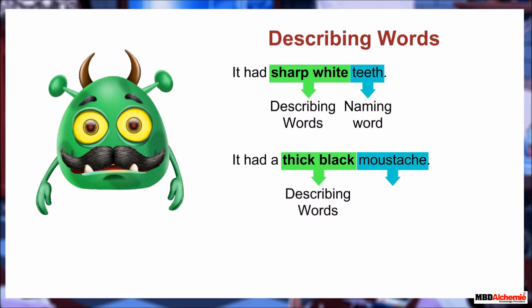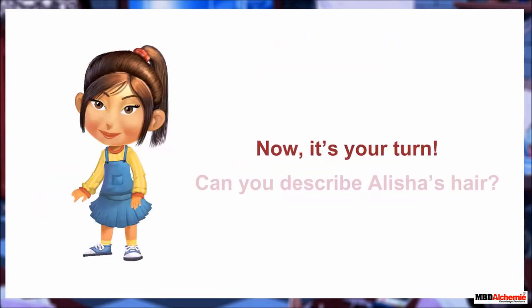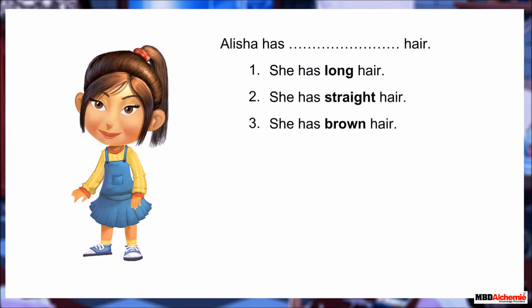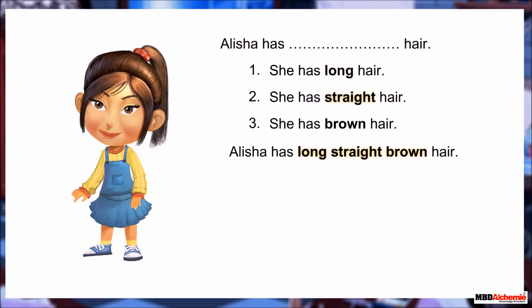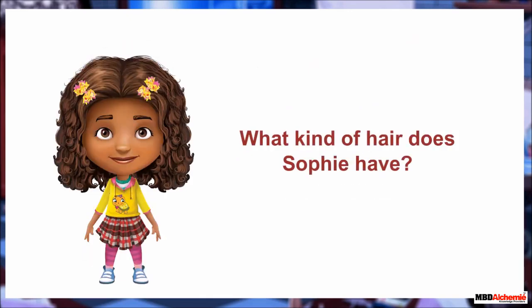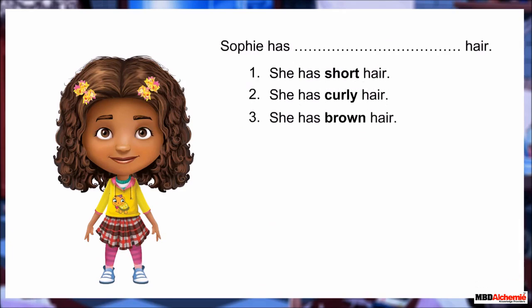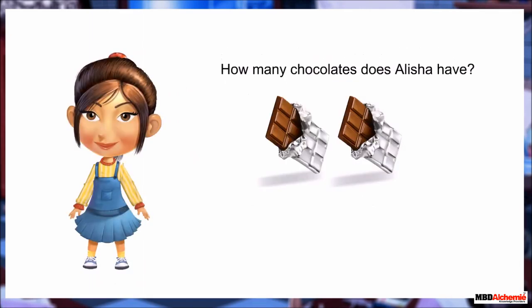It had a thick black mustache. In this sentence, 'thick' and 'black' are describing words and they describe Minty's mustache — mustache is a naming word. Now it's your turn. Can you describe Alicia's hair? She has long hair. She has straight hair. She has brown hair. Well done — you have described Alicia's hair very well. Alicia has long, straight, brown hair. The describing words 'long,' 'straight,' and 'brown' describe Alicia's hair.